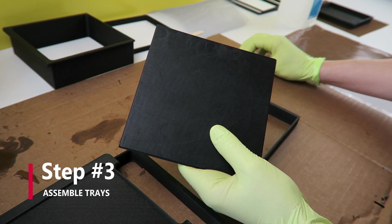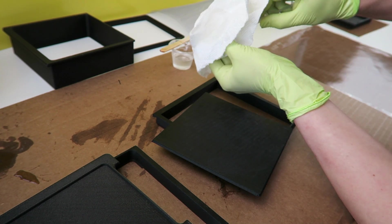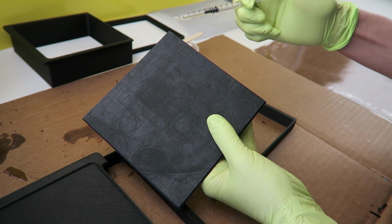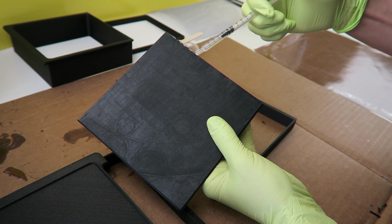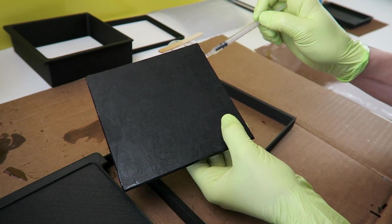To assemble the trays I used epoxy applied with a syringe, but you can use whatever adhesive you prefer for the filament you're working with. To attach the solid bottom plate to the bottom tray walls, apply adhesive along the lip and drop the piece into place. Then set a weight inside while it dries.